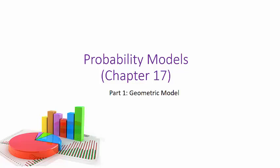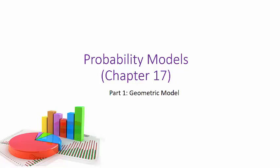We will be talking about binomial distributions, but first we start with the geometric model. Assume there's a speckled M&M promotion where 30% of the M&Ms are covered in speckles and mixed randomly with normal candy. You buy a bag and take out the candies one at a time. What is the probability that the first speckled candy you find is the fourth one?